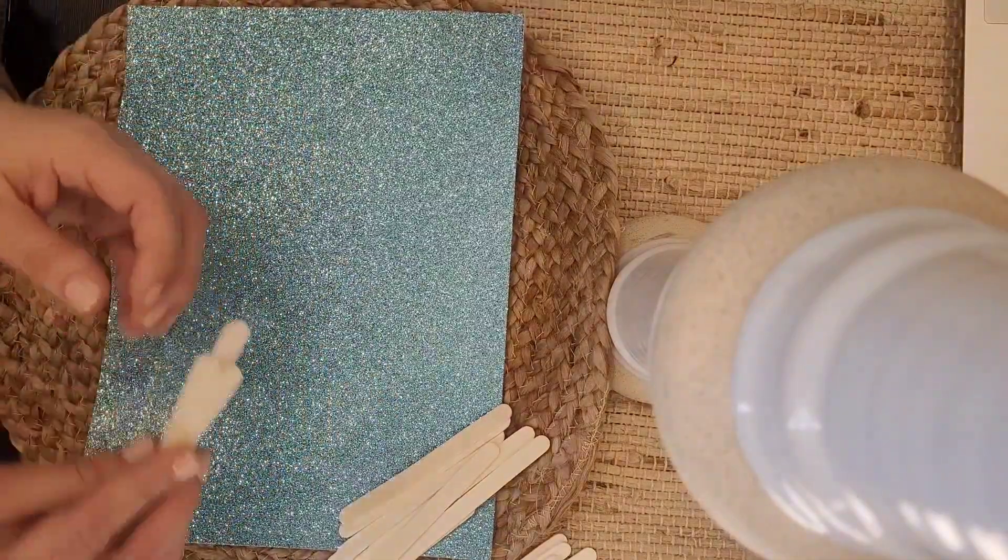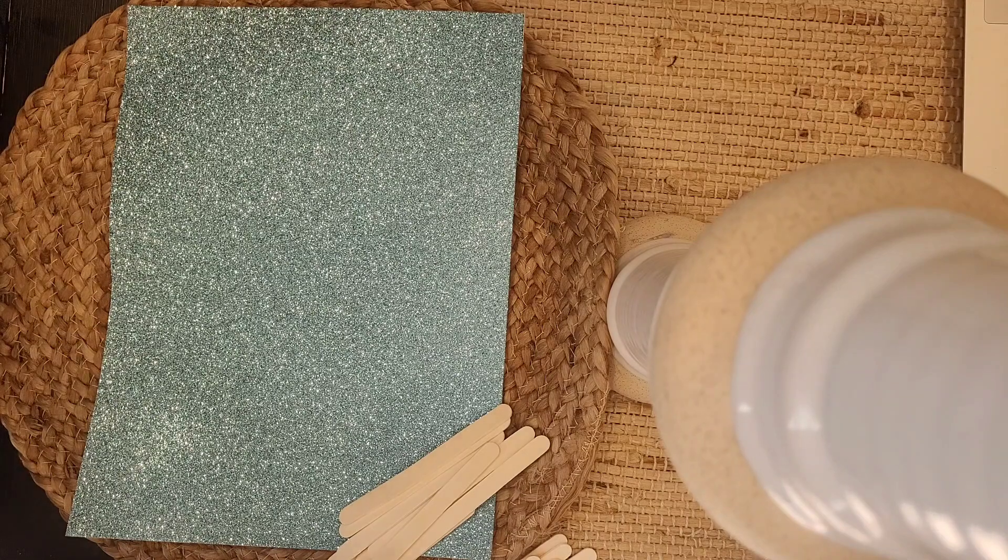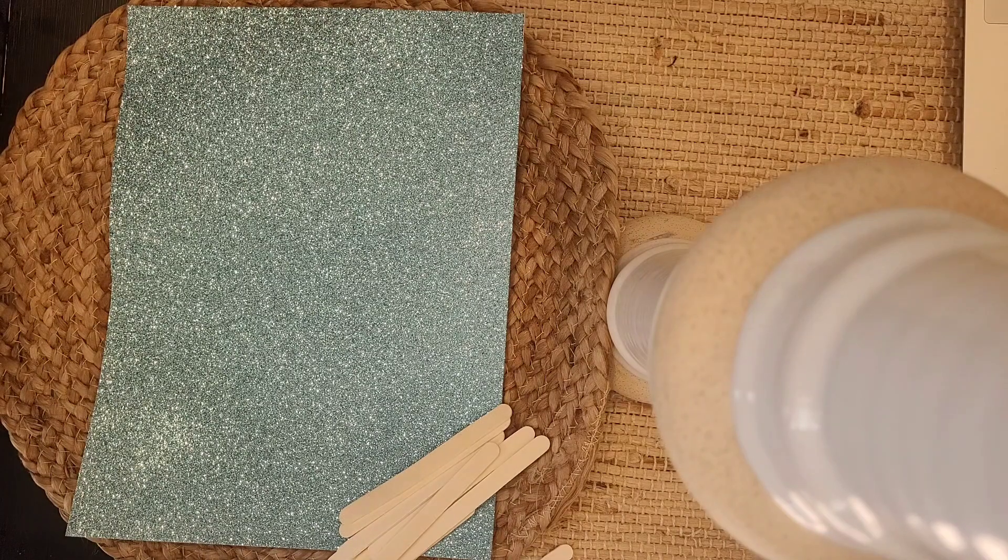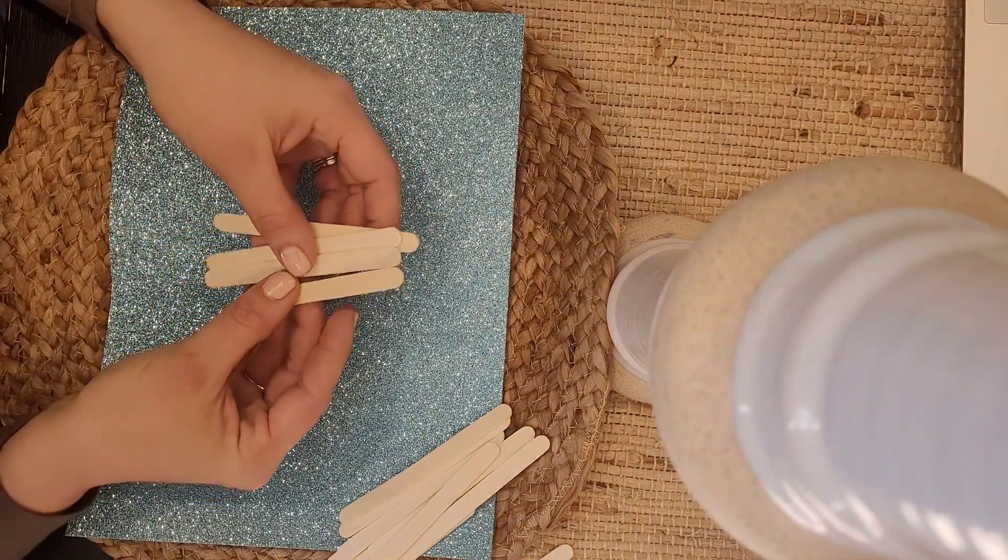The next shape I want you to make is the rectangle. How many sides does the rectangle have? Four. That's right. So we're going to get four line segments.